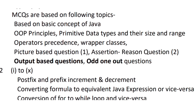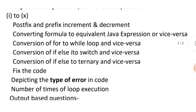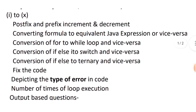Question 2 of Section A will have ten sub-questions, each carrying two marks. Various question types can be asked here: postfix and prefix increment/decrement (++ and --) where an expression is given and we have to predict the output; converting a formula into an equivalent Java expression or vice versa; conversion of for to while or while to for; conversion of if-else to switch or switch to if-else; and conversion of if-else to ternary or ternary to if-else.